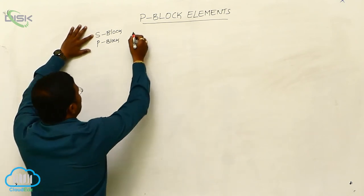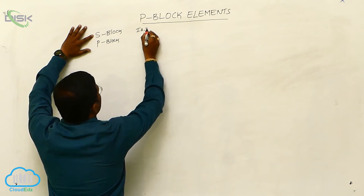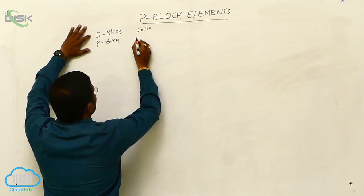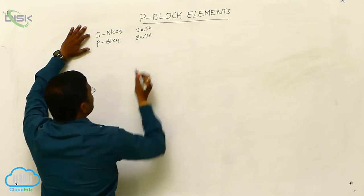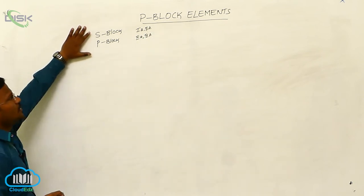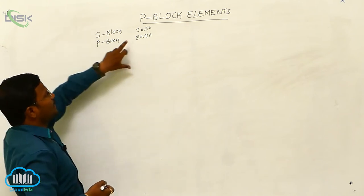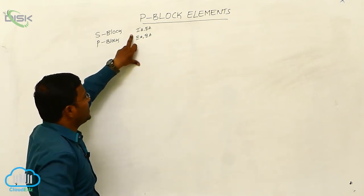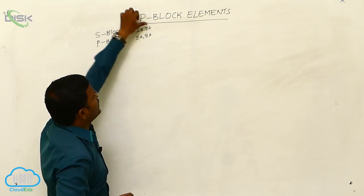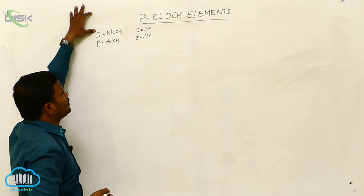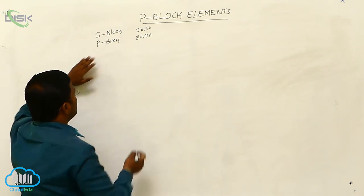Regarding S-Block Elements, we have the 1st A-Group and 2nd A-Group, followed by 3rd A-Group and 4th A-Group. In our first year course, we successfully completed the topics related to 1st A-Group, 2nd A-Group, 3rd A-Group, and 4th A-Group Elements. The 1st A and 2nd A-Group Elements belong to S-Block, whereas 3rd A and 4th A-Group Elements belong to P-Block.